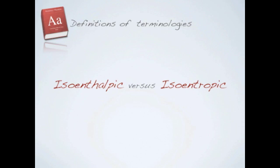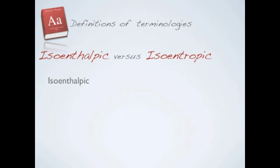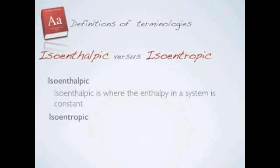Isoenthalphic and isentropic. An isoenthalphic system is a system where enthalpy is constant. On the other hand, an isentropic system is a system where entropy is constant.